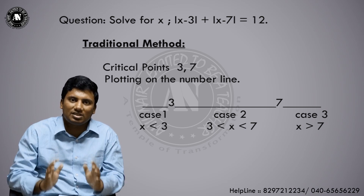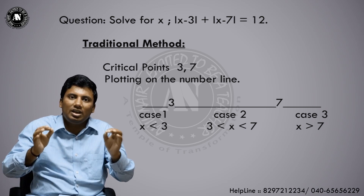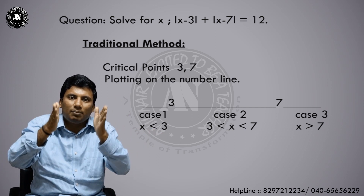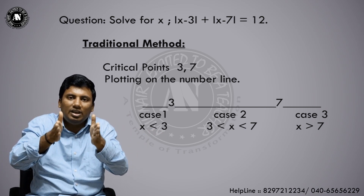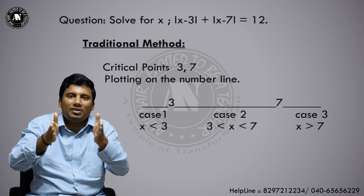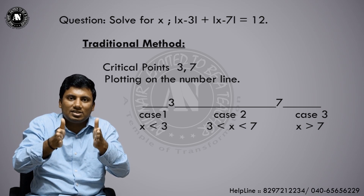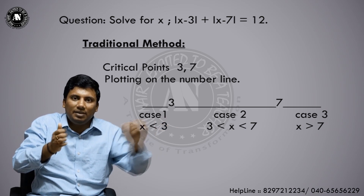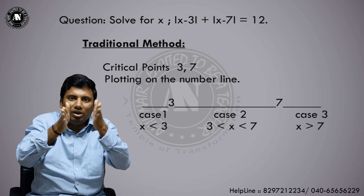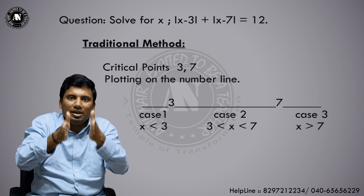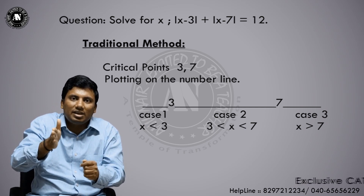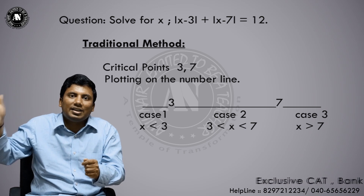The critical points of x are 3 and 7. Draw a number line with critical points 3 and 7. There are three cases in this problem: the value of x can be less than 3, between 3 and 7, or greater than 7.